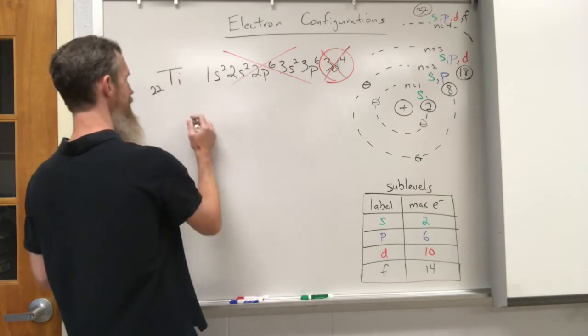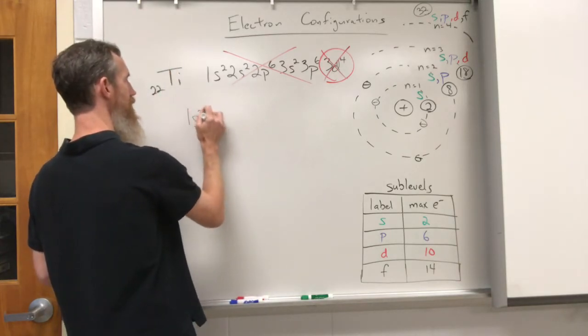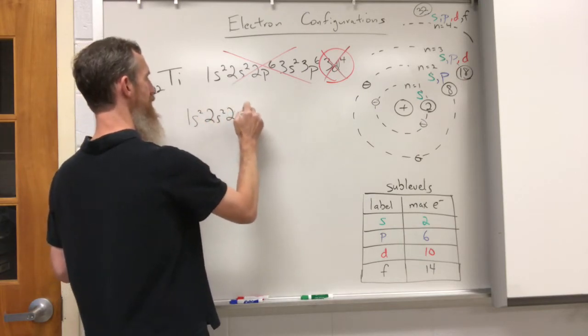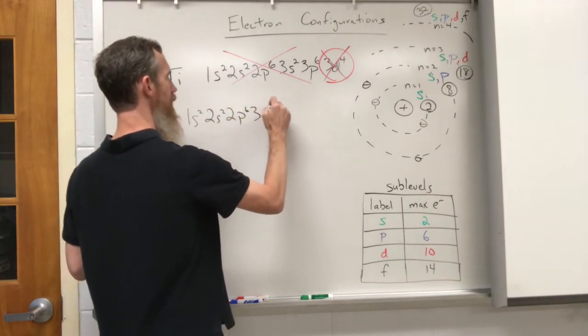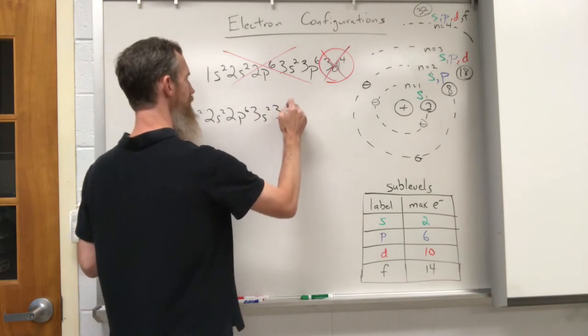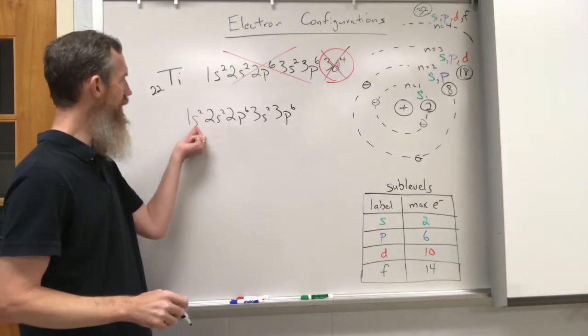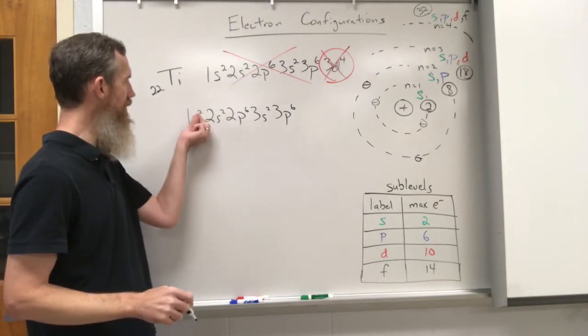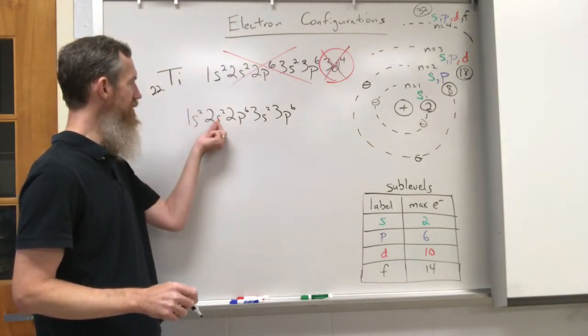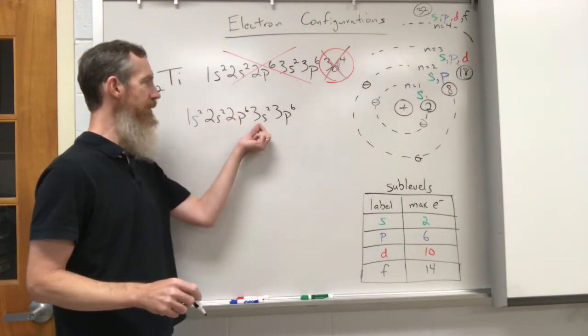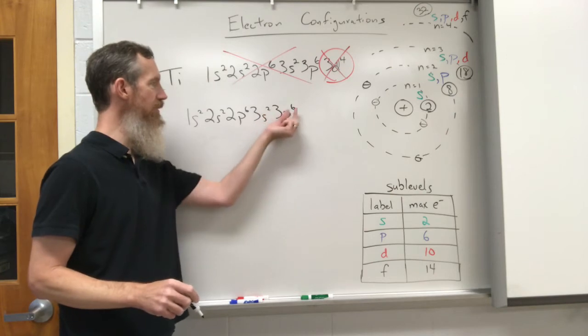What really happens is titanium, yes we have 1s² 2s² 2p⁶ 3s² 3p⁶. We're gonna stop right here, this is true. We fill in the one energy level with s sublevel 2 electrons there, 2 electrons in the s, 2 electrons in the p for the second energy level, that works. Third energy level, we fill in the 2 for the s, we fill in the 6 for the p.